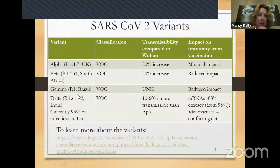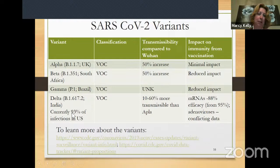Gamma was the variant that originated in Brazil. Not enough has been studied on it, but they do know there was a reduced impact from vaccination. Here's the Delta variant — it's currently responsible for 93% of infections in the United States.